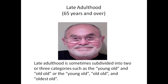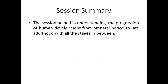Next is late adulthood, sixty-five years and over. Late adulthood is sometimes subdivided into two or three categories, such as the young-old and the old-old, or the young-old and the oldest-old.